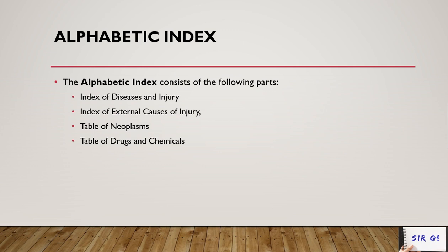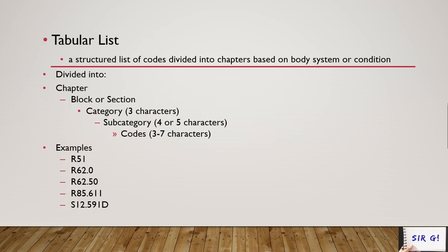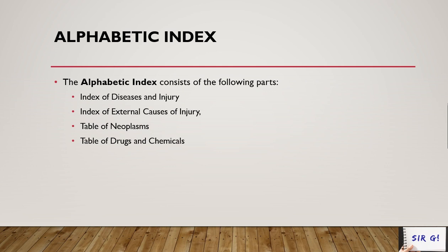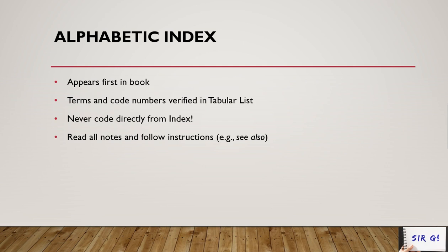Moving to the alphabetic index in detail: it consists of four parts — the index to diseases and injuries, the index to external causes of injury, the table of neoplasms, and the table of drugs and chemicals. Most of the time, you'll use the index to diseases and injuries because that is the bulk of the ICD-10-CM code sets.